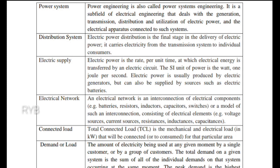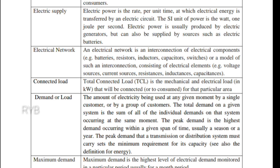The amount of electricity or load used in a specified period of time is called demand or load. Maximum demand is the highest level of electrical demand monitored in a particular period of time — it is the greatest demand occurring over a period of time.